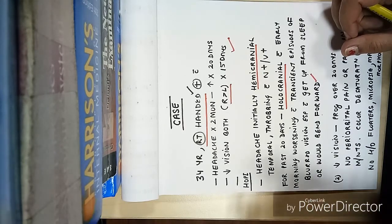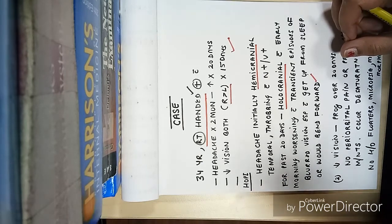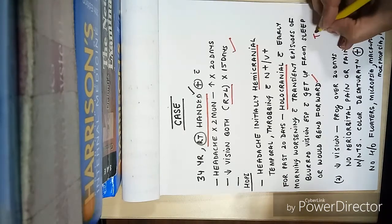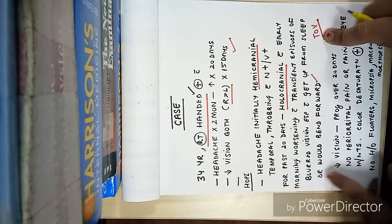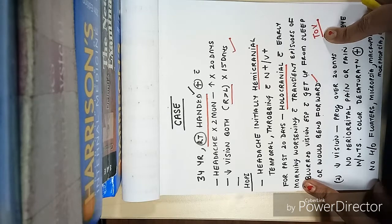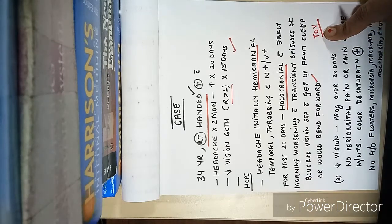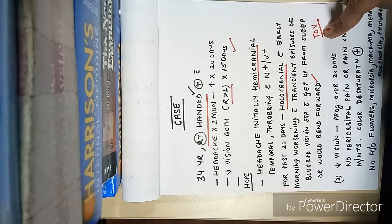Now there is worsening. The patient has early morning worsening and history of transient obscuration of vision (TOV). What are TOVs? These patients complain of blurred vision on getting up from sleep and bending forward, which tells about increased intracranial pressure.